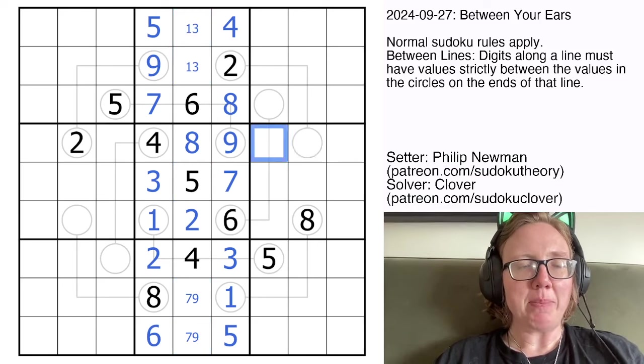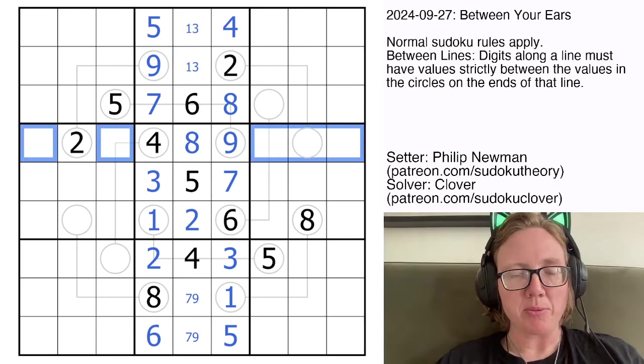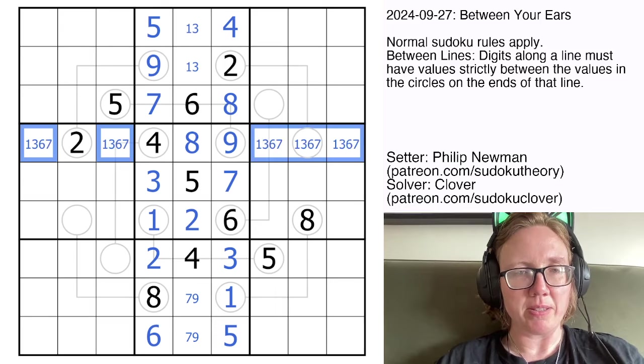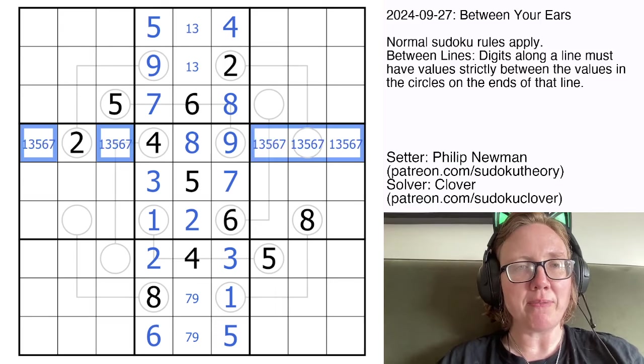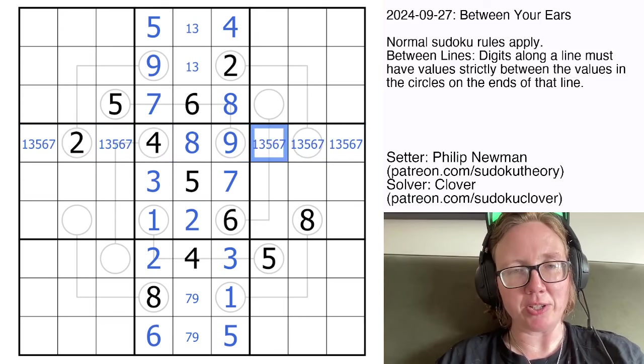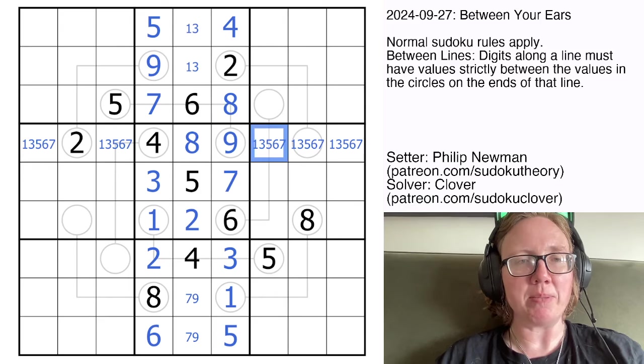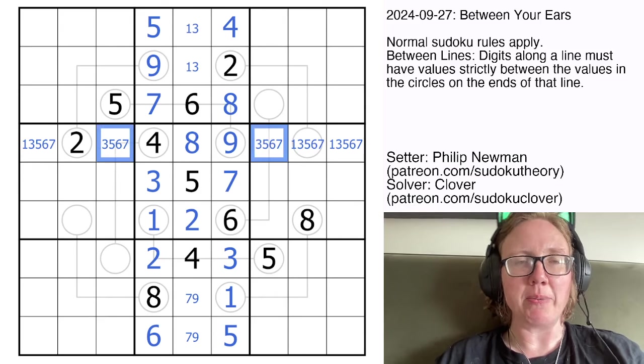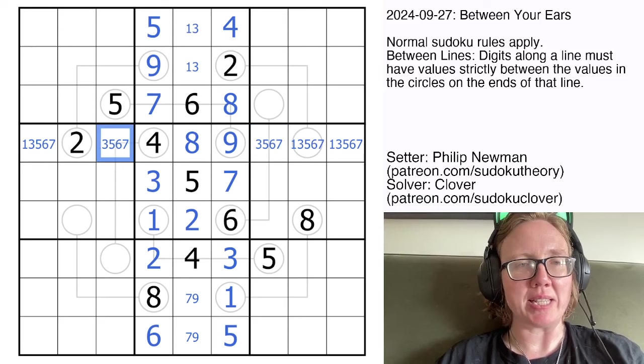So now let's consider what is happening in these rows. These are a little bit less restricted, but we should be able to get somewhere with them. So we still need 1, 3, 5, 6, 7 in this row. It seems like a lot, but we're going to start making some eliminations. So we can't ever have a 1 on a between line at all, and we also can't have a 9 on a between line, even though that's not coming up right now.